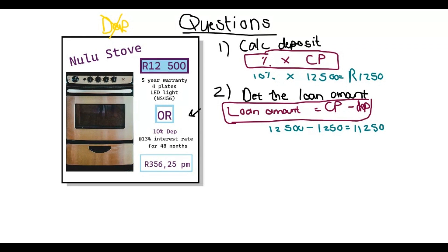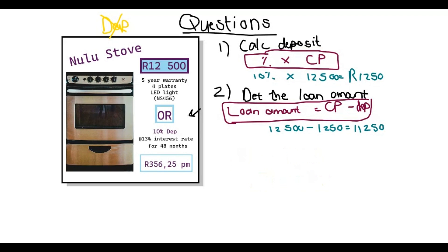Questions in maths literacy are always in order — they follow each other, so you will use the answer from question one in question two, and the answer from question two in question three. Remember that: if you're stuck, just check your previous question.